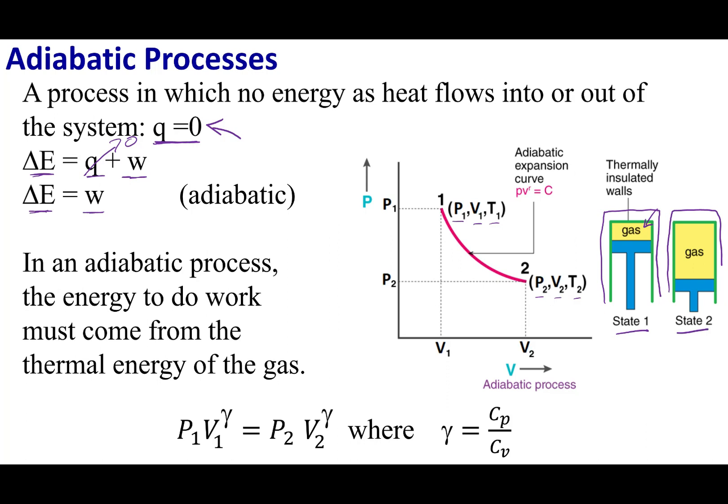And so that means I'm going to get a temperature change as I do this work. Now you guys can go ahead and look at the derivation for equations, but this is the equation that is in your equation sheet. And that is that the pressure one times the volume one raised to the gamma equals pressure two times a volume two raised to the gamma. Now gamma is going to equal CP over CV. So let's go ahead and practice this out.